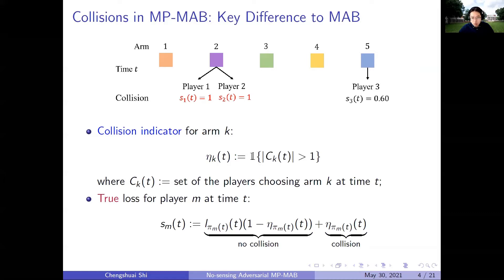On the other hand, when there is no collision on that arm, the player just directly gets the original loss. The true loss ŝm(t) summarizes the two scenarios. The figure on the top also gives an example. Player 1 and 2 select arm 2 at the same time, so they both get loss of 1. Player 3 selects arm 5 alone, so she gets the original loss, which is 0.6 here.